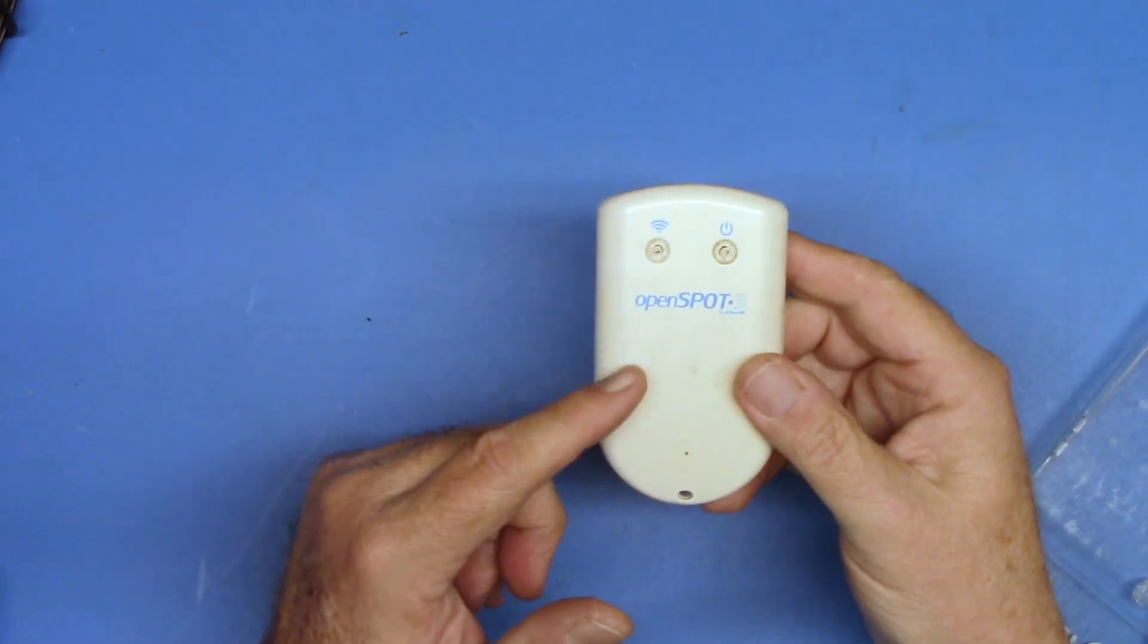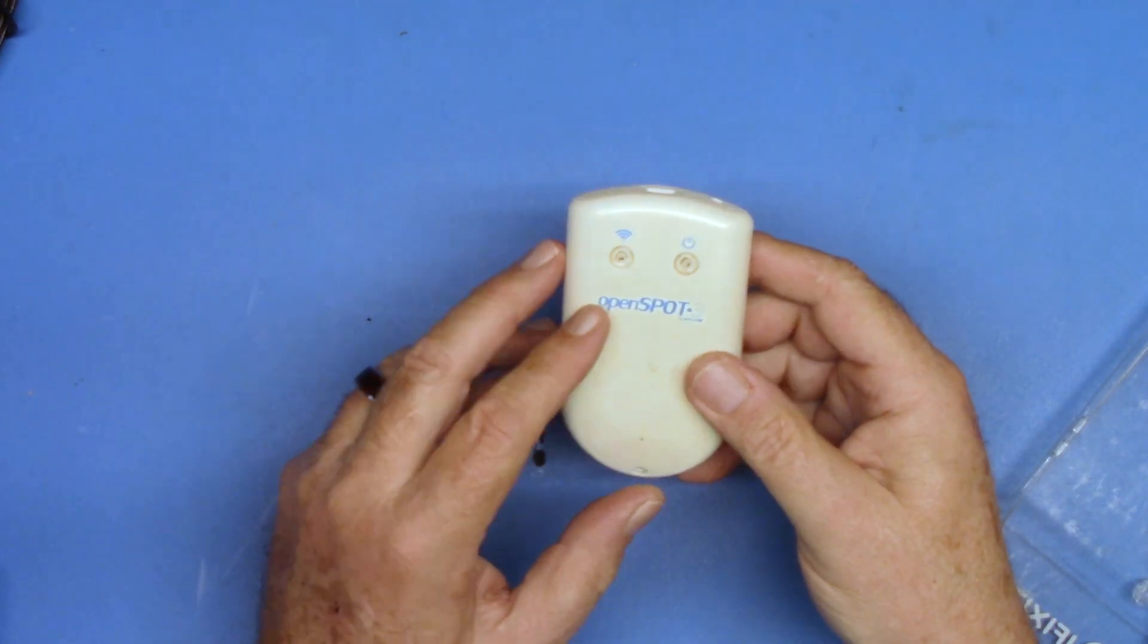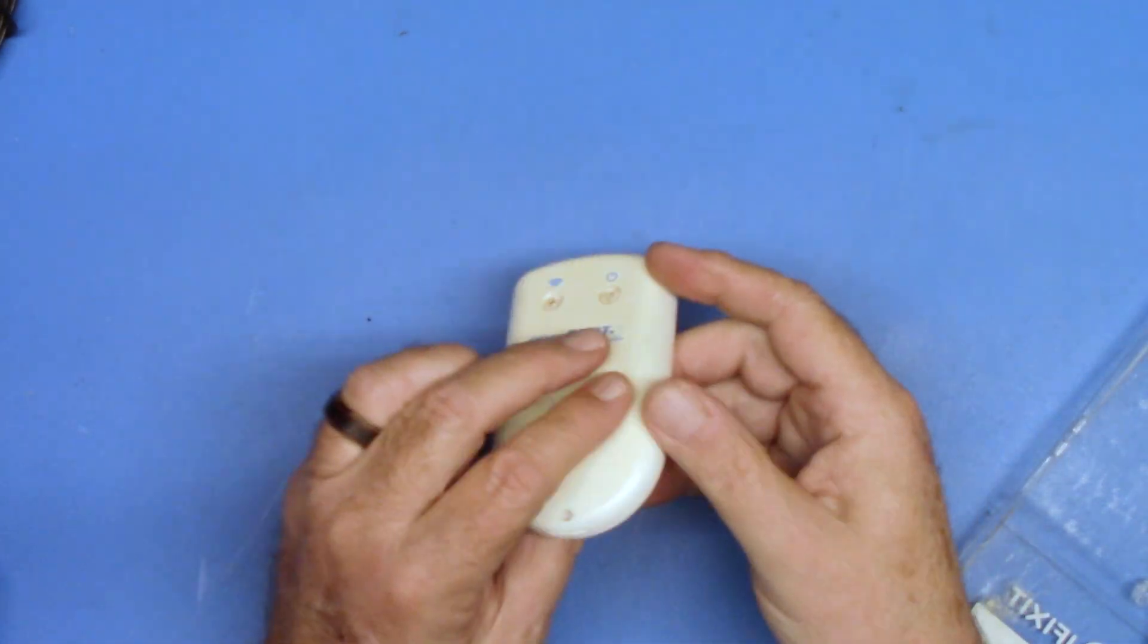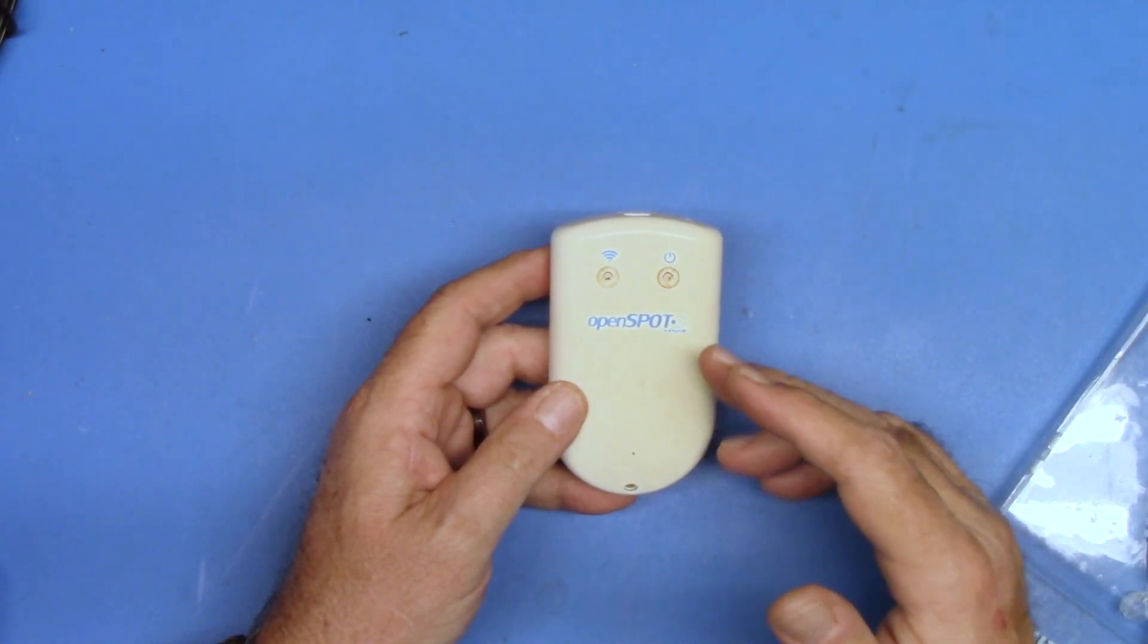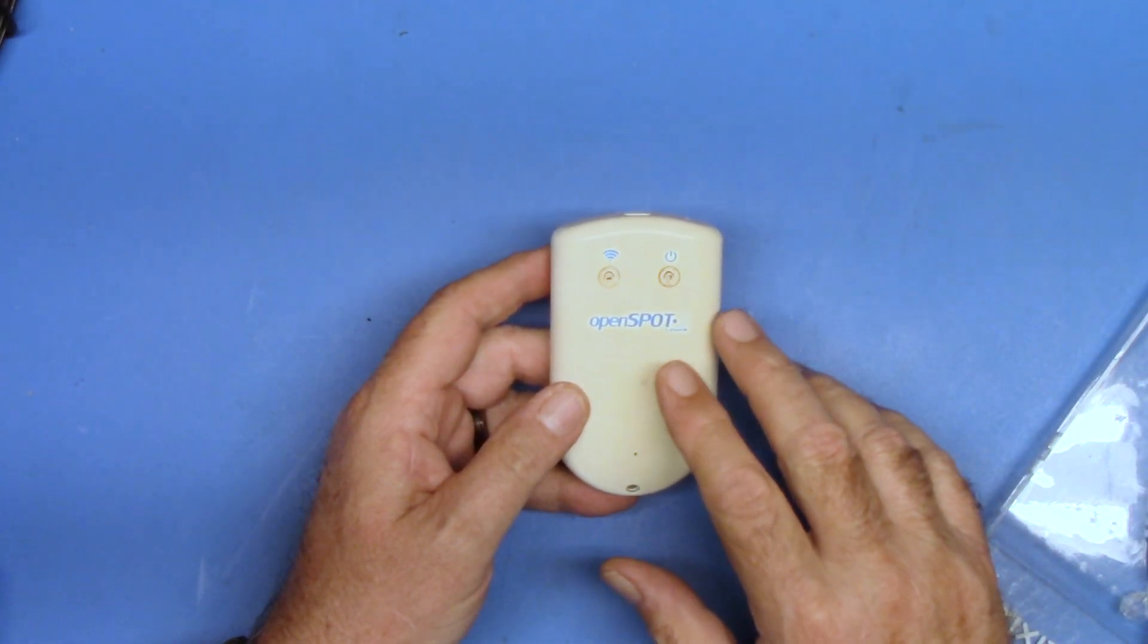So what I'm going to do, this is a LiPo lithium polymer battery that this uses. The story of the batteries is this battery. First of all, this is discontinued. This is an OpenSpot 3.